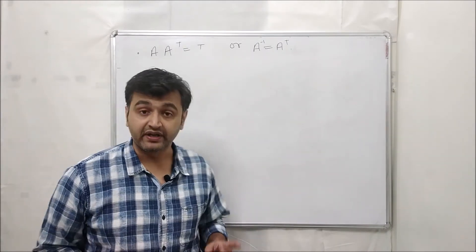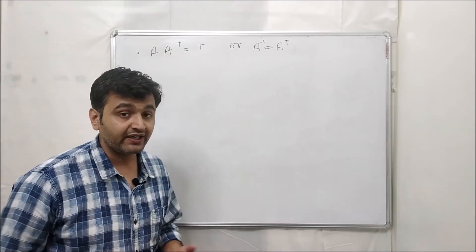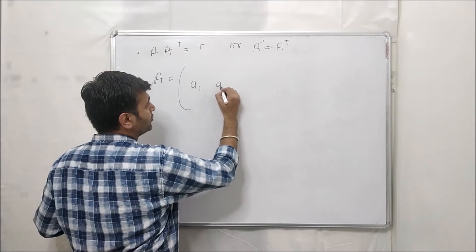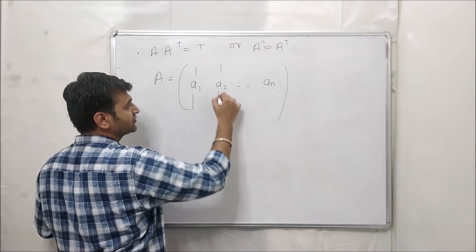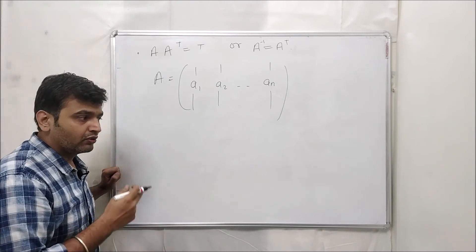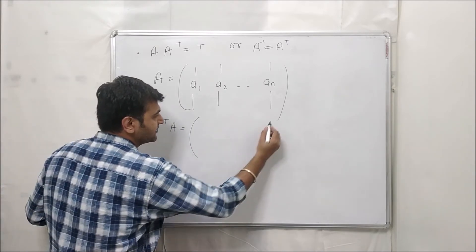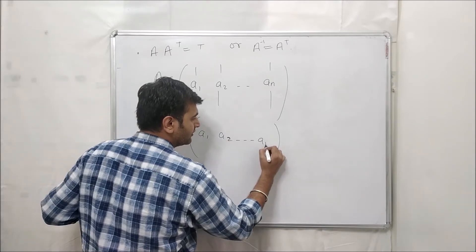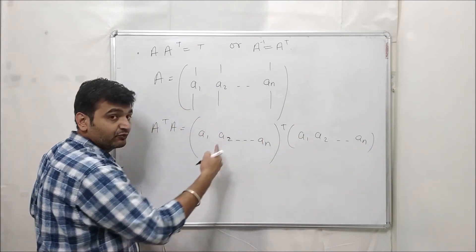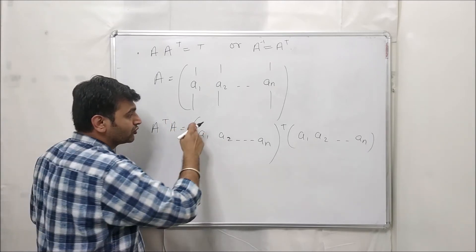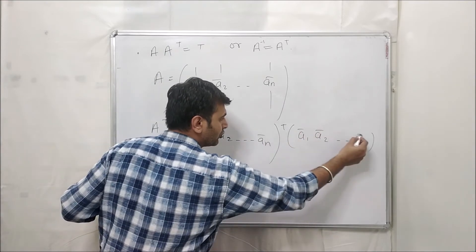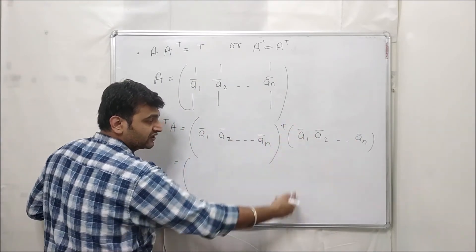Now let's write this down for an n×n matrix. Suppose matrix A is written as [A₁, A₂, ..., Aₙ], where A₁ is the first column, A₂ is the second column, and Aₙ is the nth column. Let's prove for columns directly. If I compute A^T times A, the transpose has rows A₁^T, A₂^T, ..., Aₙ^T, and the columns remain A₁, A₂, ..., Aₙ. The first row of A^T is A₁^T and the first column of A is A₁.